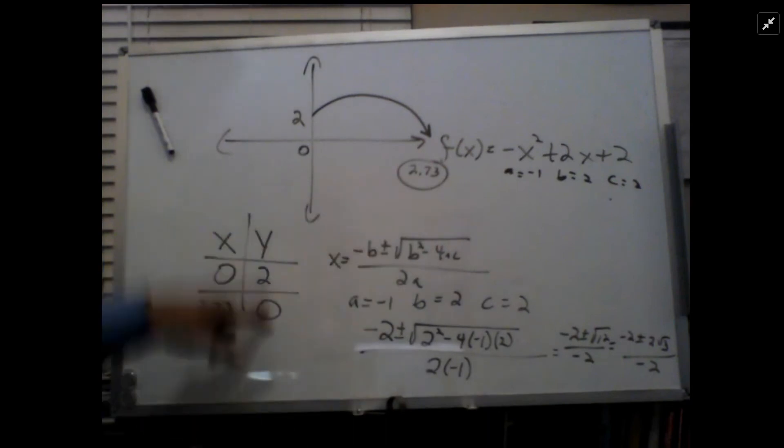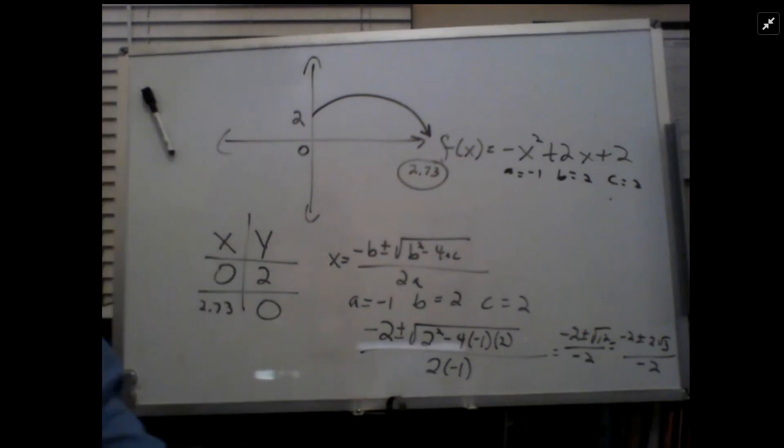So it's safe to assume that your horizontal distance, the answer is 2.73 units, feet, inches, meters, whatever they chose to find that horizontal distance.